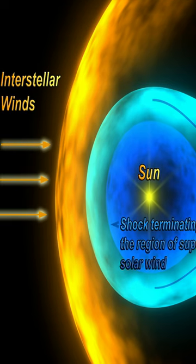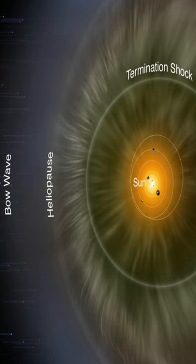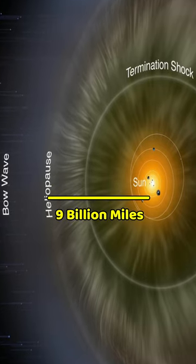This heliosphere acts as a shield that protects the planets from interstellar radiation. Its closest boundary is thought to extend about 9 billion miles from the sun.